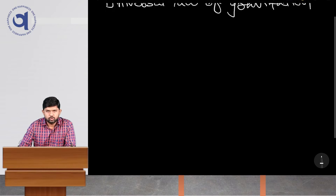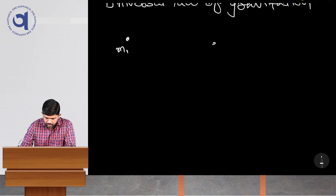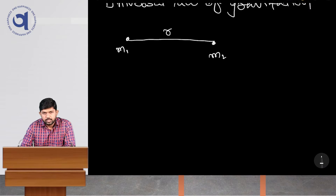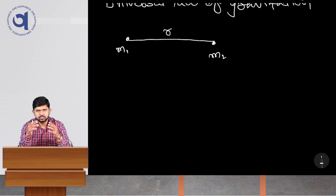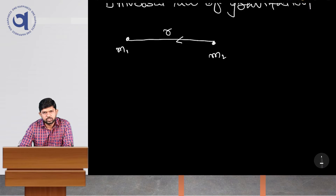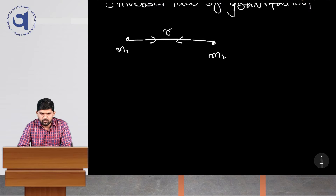If we take two small mass particles — let us say mass M1 here and another mass particle M2 here — and the distance between them we take as R. Now, these two masses are going to exert some force on each other. Mass M1 is going to exert force in this direction on M2, and mass M2 is going to exert force in this direction on M1.